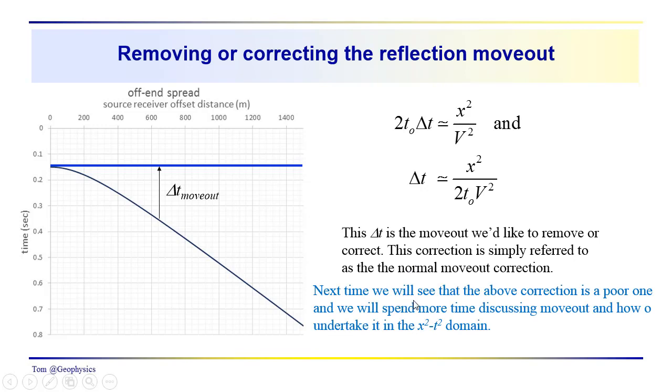And the next time, we're going to see that this correction, the assumption that delta t squared is relatively small, actually turns out to be a pretty poor assumption. And we'll spend some time discussing move out, and how to undertake it in the x squared t squared domain. We'll also look at a Taylor series expansion of the reflection move out, and see if we can't do a little bit better job. And we'll find that because delta t squared is really not so small, that that doesn't work. What we end up having to do is go into the x squared t squared domain.